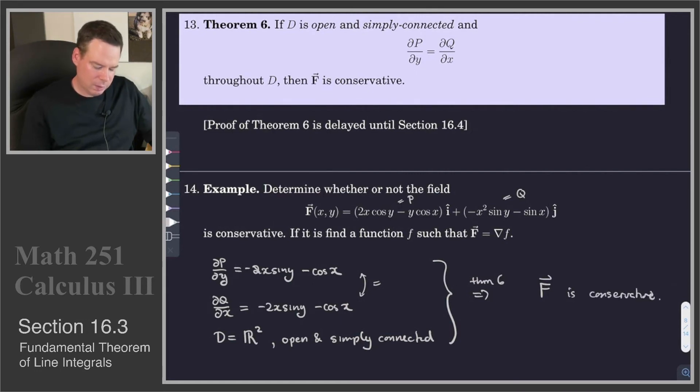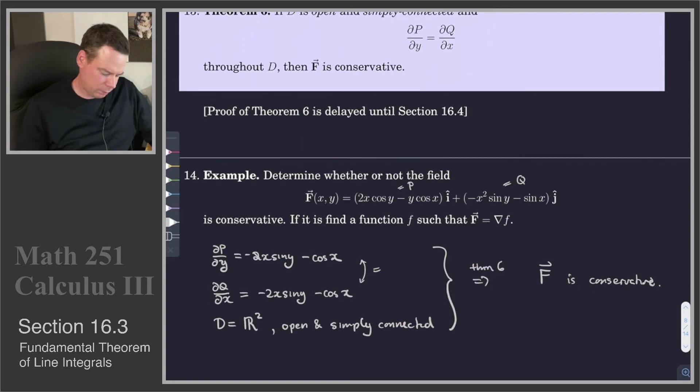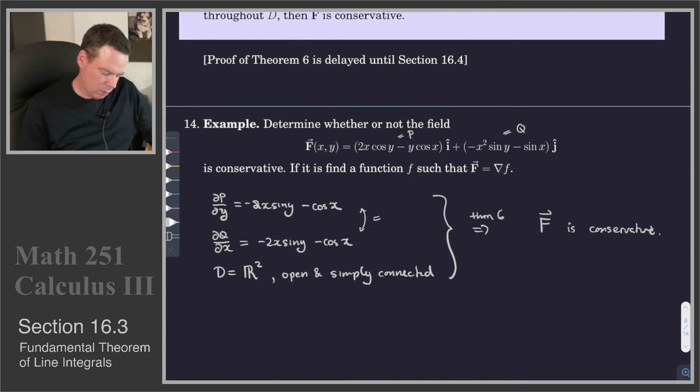So that's an existence result. It says there exists a potential function for this vector field. Now we've got to go ahead and find it. So how do we go ahead and find this? So we want to find the potential function, little f. We're going to use partial integration to do this.